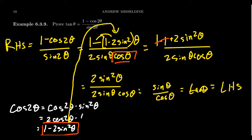In which case then the 2s cancel, one of the sines cancel, and we're left with sine over cosine. Thus proving the trigonometric identity we were looking for.